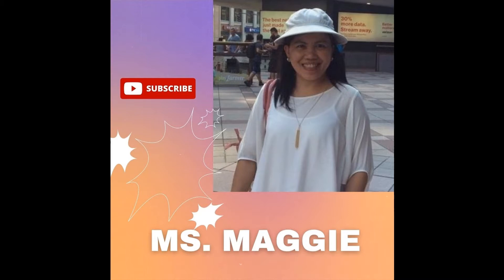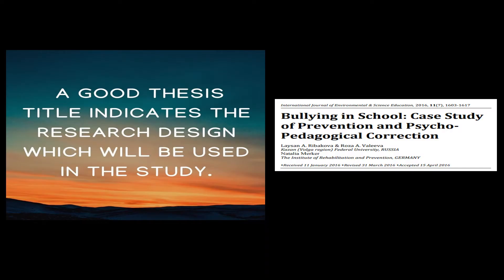Now let's talk about writing research title tip number one. A good thesis title indicates the research design which will be used in the study. Sometimes it is explicitly stated, which means the specific research design used is included in the title. An example of which is: 'Bullying in school: Case study of prevention and psychopedagogical correction.' In this study, the research design was explicitly stated — this is a case study.